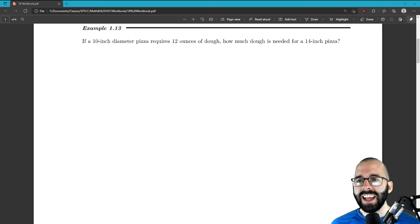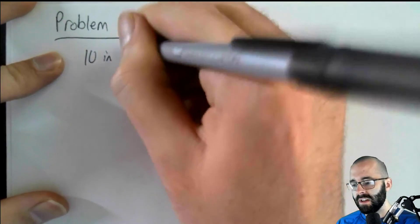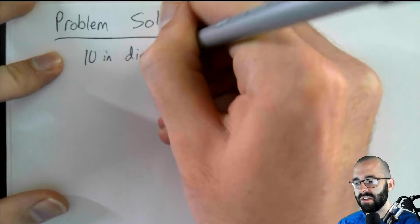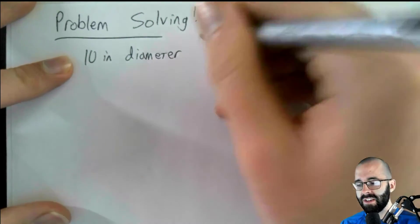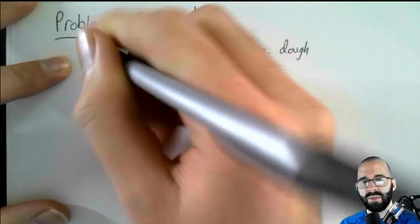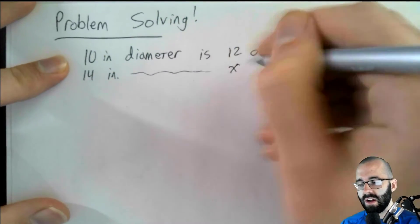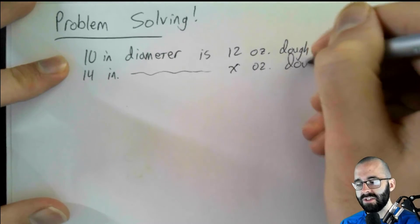Problem 1.13: If a 10-inch diameter pizza requires 12 ounces of dough, how much dough is needed for a 14-inch pizza? I'm going to do the wrong answer. So don't write this down if you're copying down what I'm writing. 10 inches for the diameter. Well, you can write this down, actually. 10 inches of diameter is 12 ounces of dough. The question is, if we have 14-inch diameter, how many ounces of dough is this? You can write this part down.